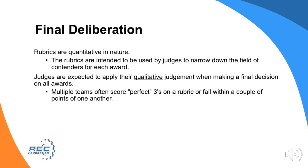Judges are always expected to apply their qualitative judgment to determine the final winner for all awards. Later in the season, judges will often see multiple teams score perfect threes across the board on the STEM rubric. Their qualitative judgment becomes critical under these circumstances.